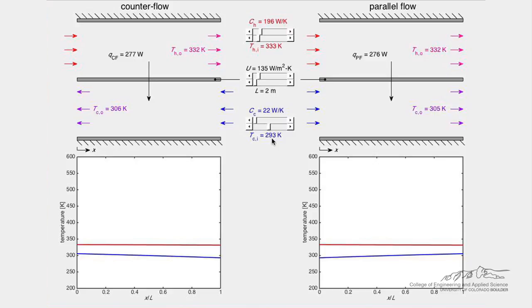This demo solves for the hot side fluid temperature, shown with the red lines, and cold side fluid temperature, shown with the blue lines, as a function of normalized position along the length of a counter flow heat exchanger, shown in the left column, and a parallel flow heat exchanger, shown in the right column.